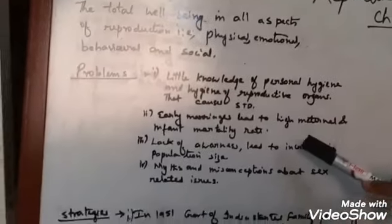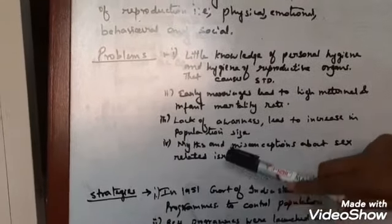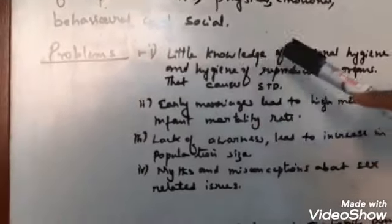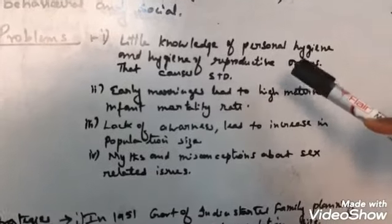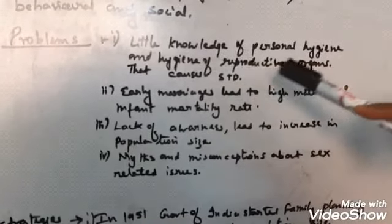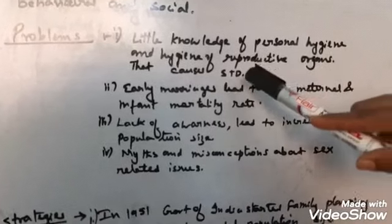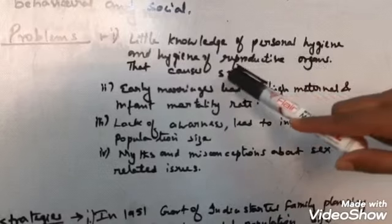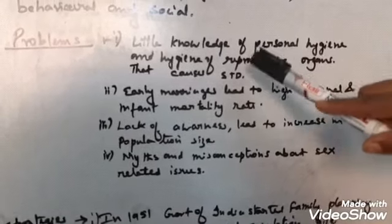Now, we are going to study about the problems and strategies of Reproductive Health. What are the problems? The first is there is very little knowledge about personal hygiene and personal health by various people in our country, and this little knowledge may lead to various types of diseases in the reproductive organ like STDs, that is sexually transmitted diseases.